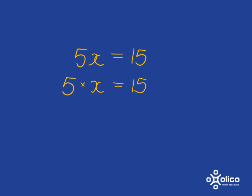So what is this equation saying? It's saying if we take a number and multiply it by 5, it will be equal to 15. A number multiplied by 5 is equal to 15.